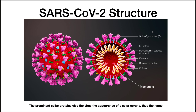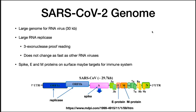This virus family has been around for years but most of the time they just cause simple colds. It's only in the last decade or so that we started to get these severe lower respiratory infections, and SARS-CoV-2 is the first one that's caused a global pandemic. The SARS-CoV-2 genome is 30,000 base pairs long — very large for an RNA virus.